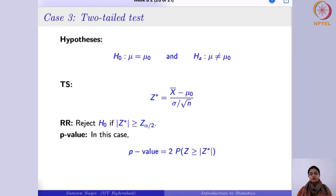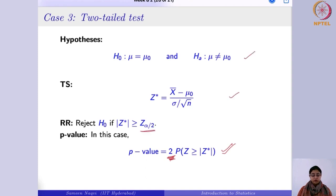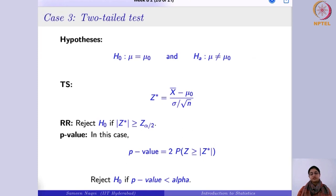The p-value in the two-tailed test is twice the probability that Z ≥ |z*|. The factor of 2 accounts for extremes in both directions — extreme values can happen in both the left and right tails. You reject if this p-value is less than alpha. You can find P(Z ≥ |z*|) from any standard normal table or software.